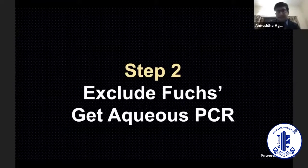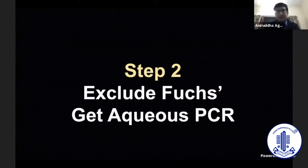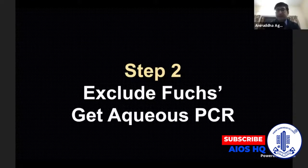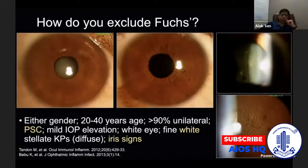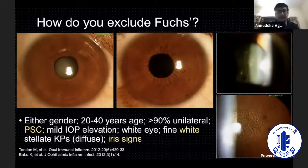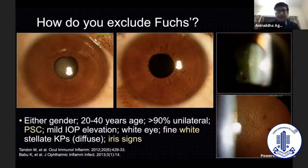The next important step in viral anterior uveitis is to exclude Fuchs, because patients of Fuchs uveitis essentially do not require any treatment apart from treatment for complications such as cataract and glaucoma. Within the second step, the most important aspect is to get an aqueous PCR to understand the etiology of the virus. Fuchs is very commonly seen in young individuals who are 20 to 40 years of age, mostly unilateral, with mild IOP elevation and a white eye.